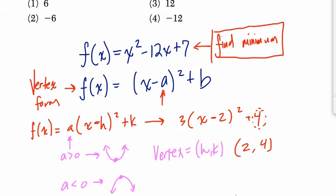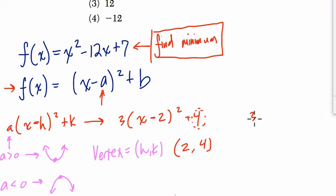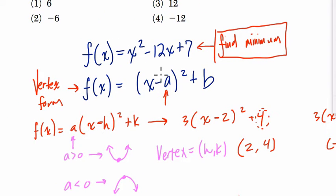In a different example, if you saw 3 times x plus 2 squared plus 4, that would mean that the vertex is negative 2, 4. In order to get a plus 2 here, you have to subtract a negative. So vertex form shows you the vertex. And we want to know, essentially, in this case, what is h.